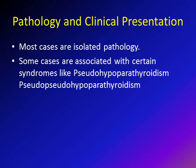Most of these cases are isolated pathology, meaning the child only has either unilateral or bilateral shortening of the metatarsal, which is usually the fourth metatarsal. However, some cases are associated with certain syndromes — rare syndromes like pseudo-hypoparathyroidism or pseudo-pseudo-hypoparathyroidism.